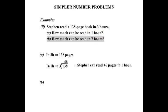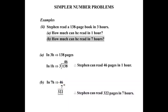Part B: how much can he read in seven hours? Given that he reads 46 pages in one hour, in seven hours it will be seven lots of 46 — so it's a multiplication. Seven times 46 works out to be 322. Stephen can read 322 pages in seven hours.